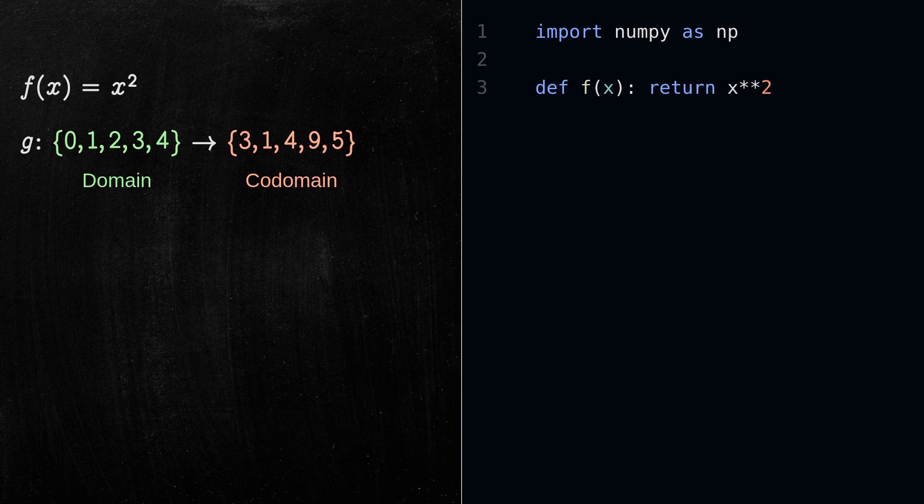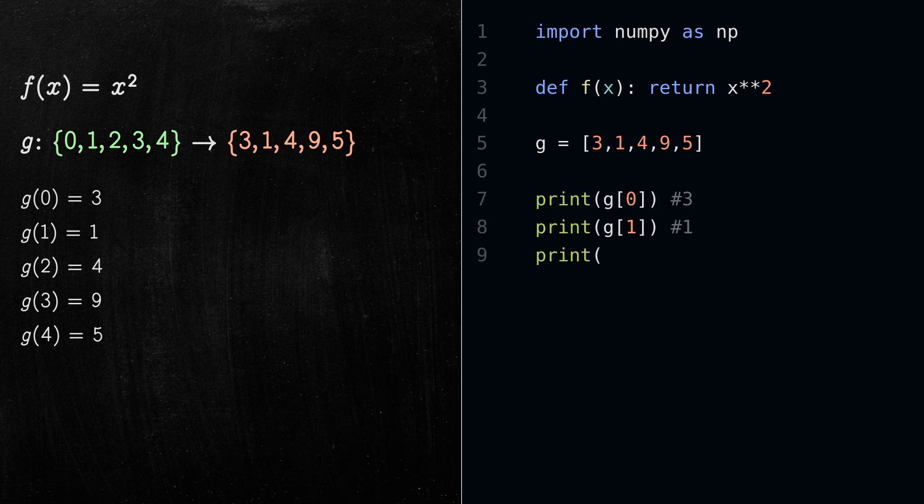The best way to represent this type of function is with a data structure such as an array. Notice that we only need to represent the codomain because the domain is already part of the array.